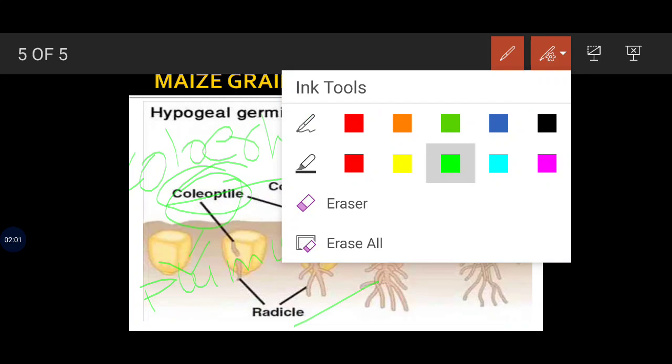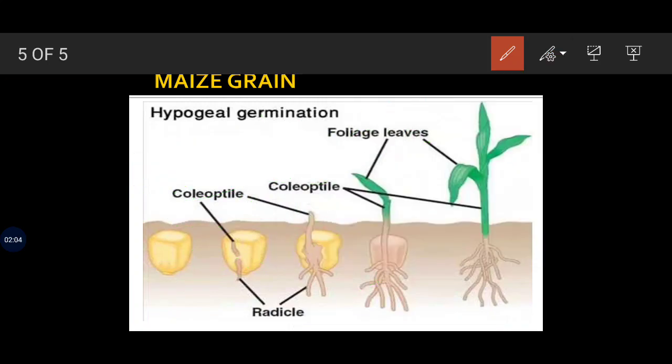They peer out and then start coming outside. You may see in the diagram very clearly that the radicle later differentiates and develops into the root.